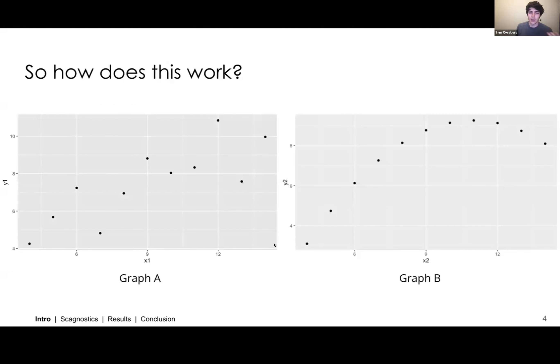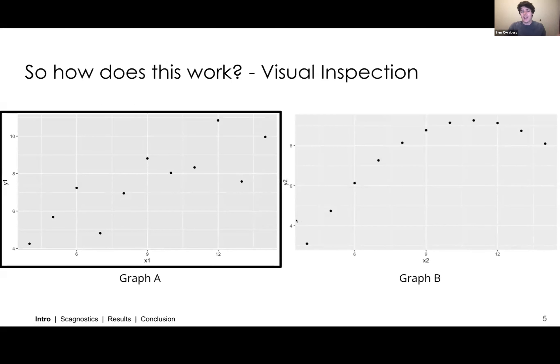And so if we look at these two graphs, graph A and graph B, we can see that graph A most likely comes from a random spread around some linear data, whereas graph B has a really low variance around a quadratic form of some equation. And so when we look at this with our visual inspection, graph A looks more linear than graph B.